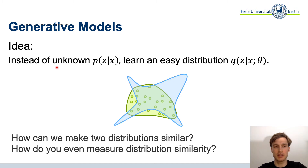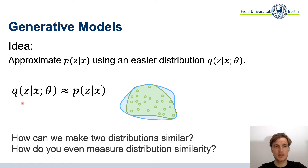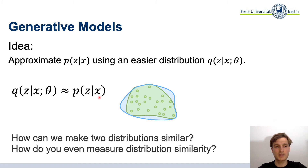Instead of calculating our unknown posterior, we approximate it with an easy distribution: q(z|x, θ), where θ indicates we use a neural network. This is something we always do — if you don't know a function, approximate it with a neural network. Our goal is that our neural network approximates the posterior distribution.